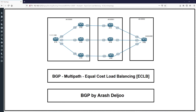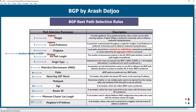Let's talk about multipath. Let's first go through the best path selection rules. You can see that multipath comes after the next-hop IGP metric rule and before the age or oldest eBGP route.